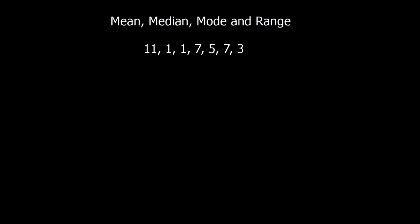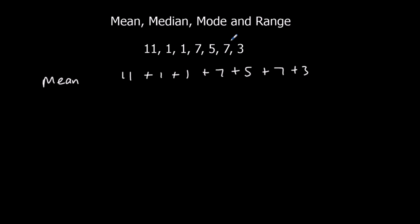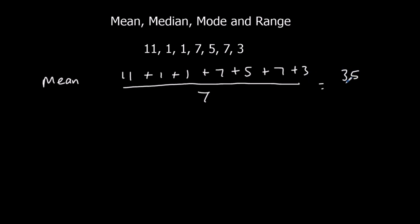Let's do one more example. The mean — add them all up, divide by how many. We've got 11 plus 1 plus 1 plus 7 plus 5 plus 7 plus 3. This time there are 7 numbers, so we divide by 7. They add up to 35. 35 divided by 7, that's 5. So the mean is 5.